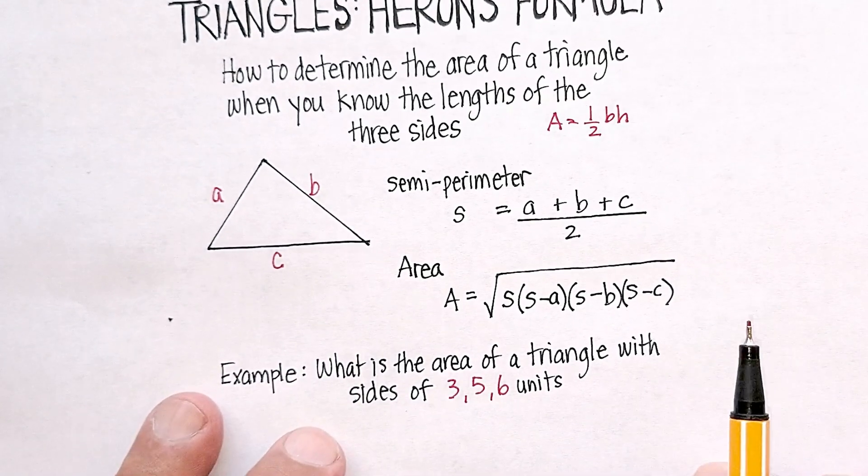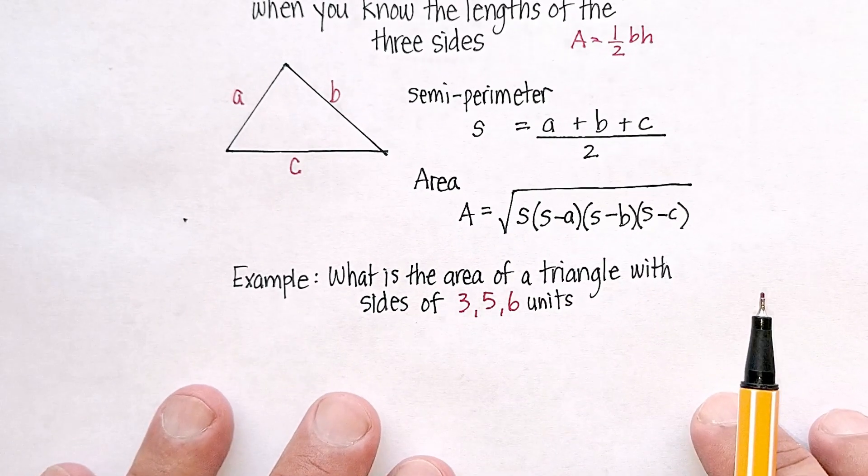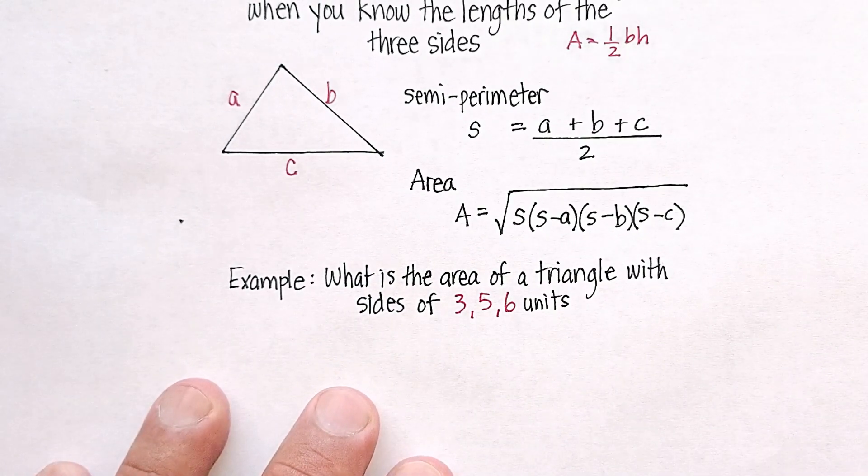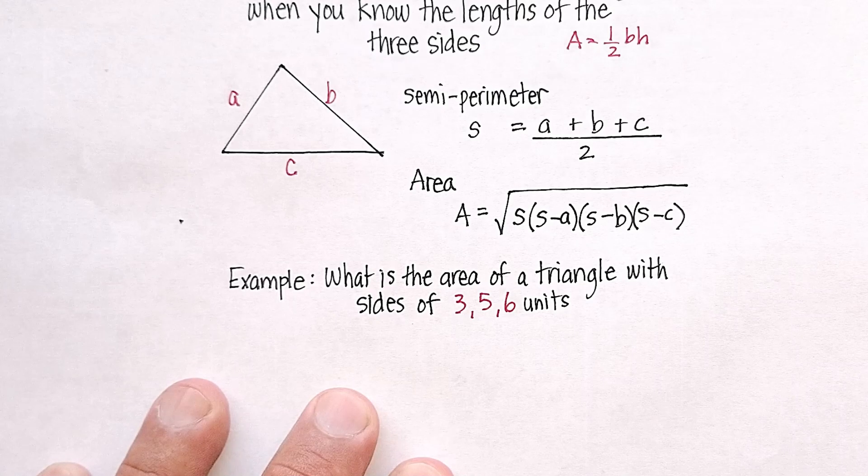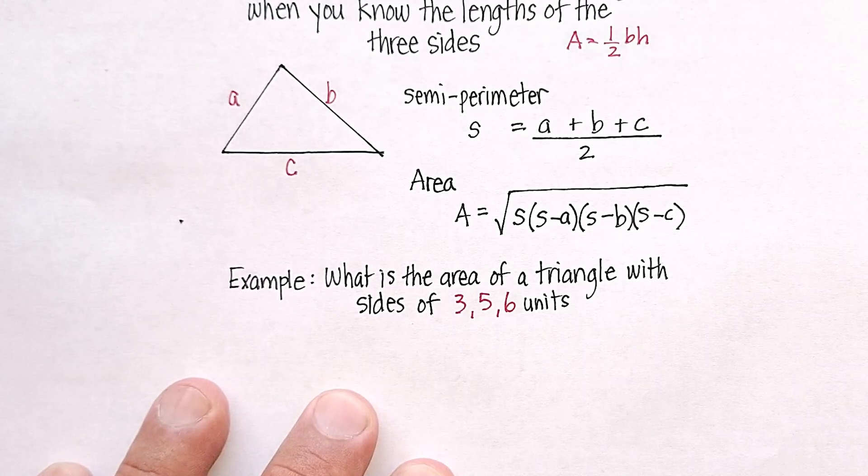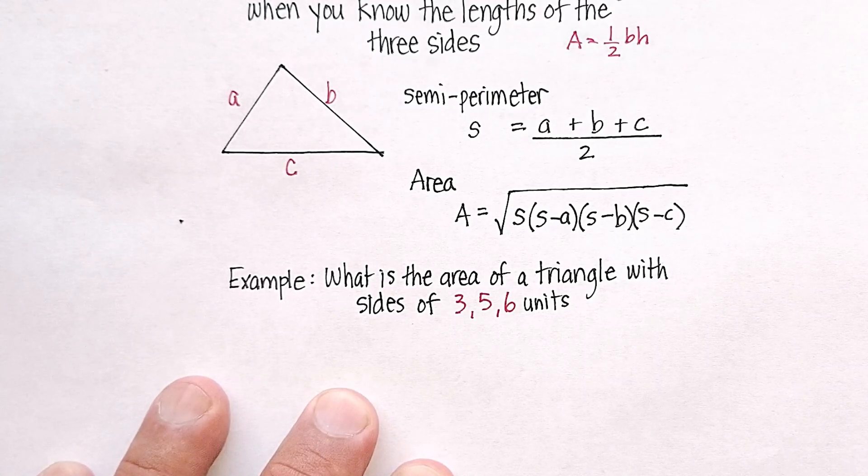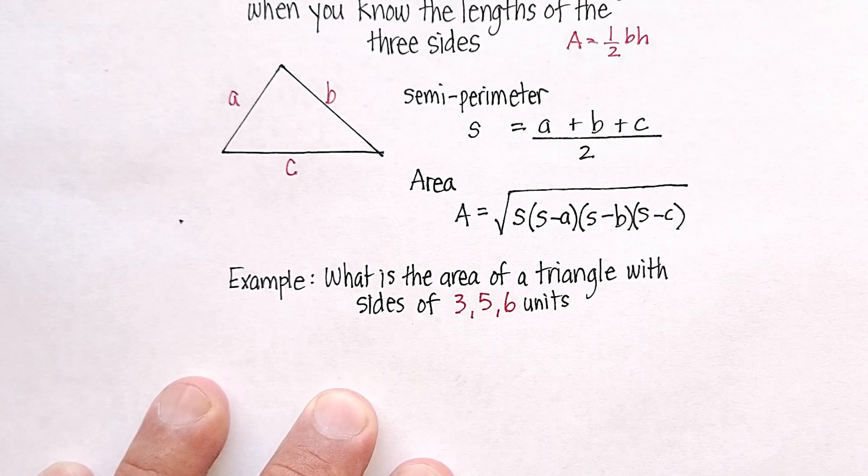So we're going to actually do this with an example. Let's assume that we have a triangle. What is the area of a triangle where the sides are lengths of 3, 5, and 6?